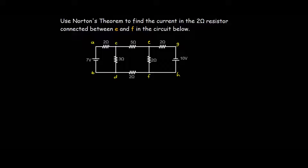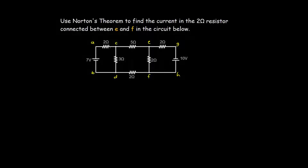In this lesson, we are going to solve this question on screen. We should use Norton's theorem to find the current in the two-ohm resistor connected between E and F in the circuit below.